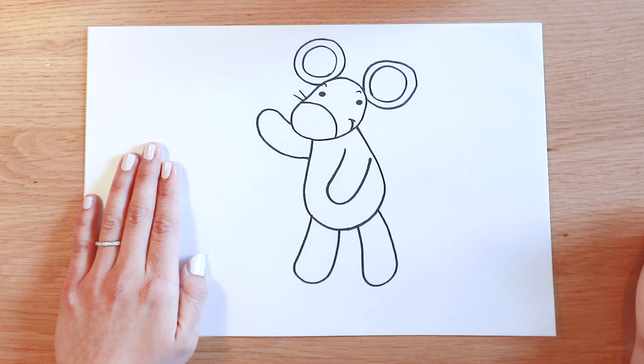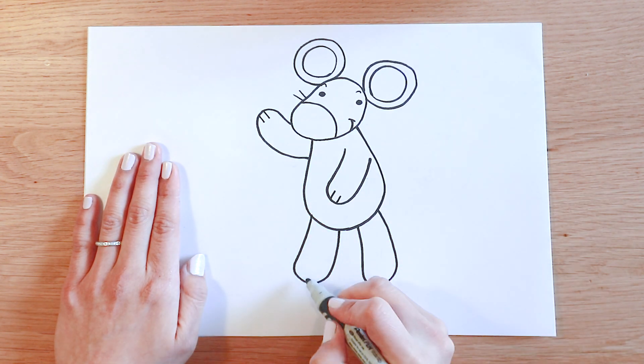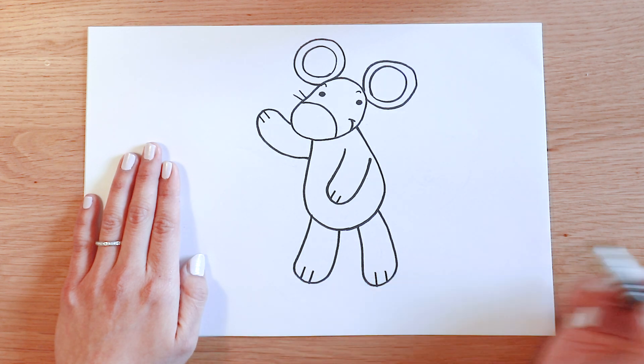Now I'm gonna add some lines to make his fingers and toes. One, two, three, four.